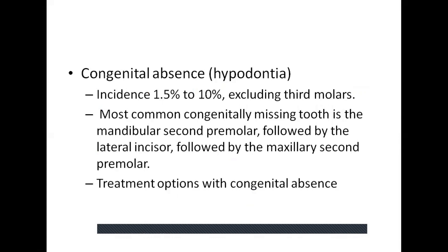Congenital absence has an incidence of 1.5 to 10% including molars. The most common congenitally missing tooth is the mandibular second premolar, followed by the lateral incisor, then the maxillary second premolar — a very important exam question. Congenital absence of a premolar is commonly treated orthodontically if extraction treatment would have been required, closing all spaces. With excellent occlusion and minimal crowding, it may be treated prosthetically. Congenital absence of the lateral incisor may be treated by moving the canine to the lateral incisor position and performing restorative lateralization, or alternatively placing a prosthetic replacement.